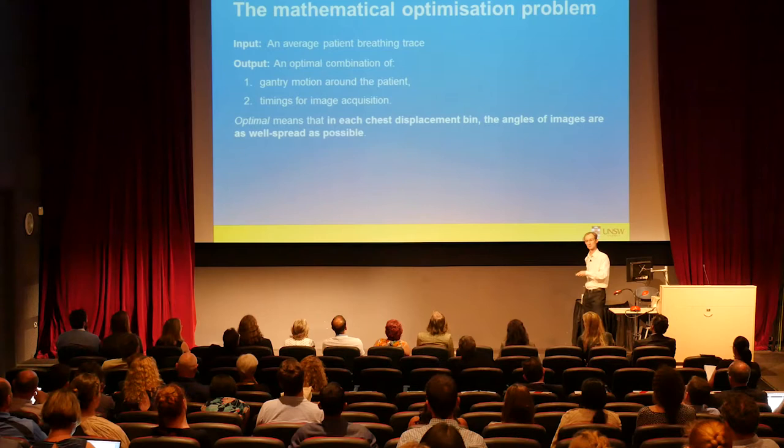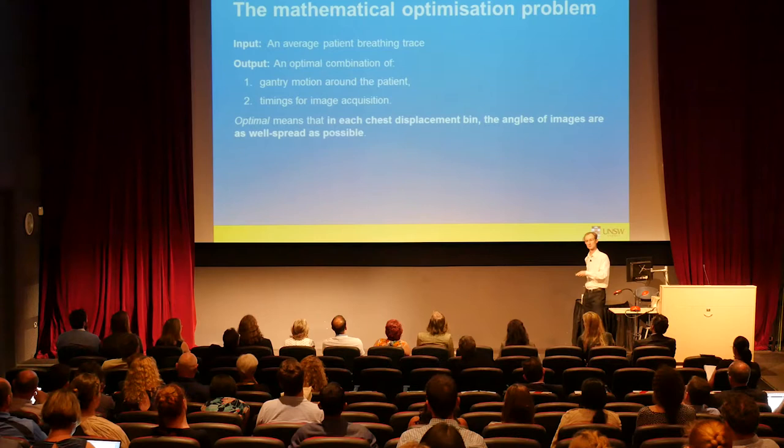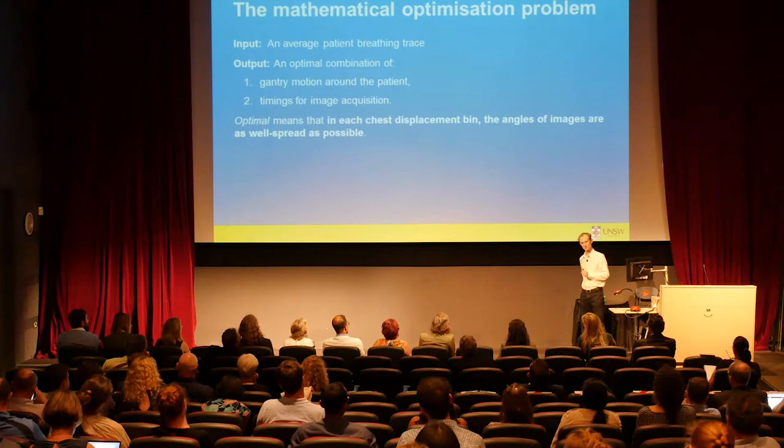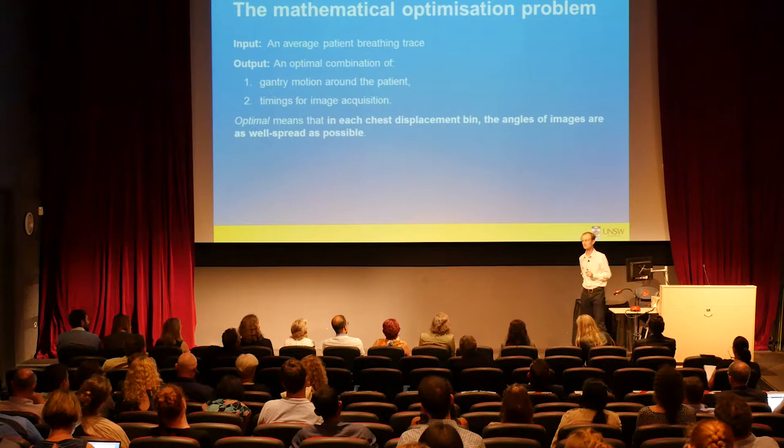The output is: how does the gantry move around the patient? Does it cruise around uniformly, or — since these machines can accelerate and decelerate very rapidly — should we take advantage of that to improve images? Also, when you pulse with the x-rays to image the patient, that timing is under your control and should be optimized. The goal is that in each bin — for example the red bin — we want a well-spread collection of angles.